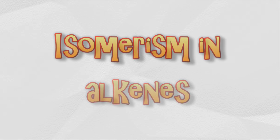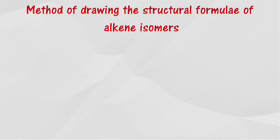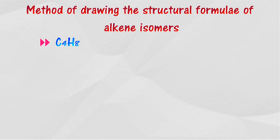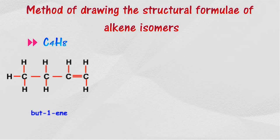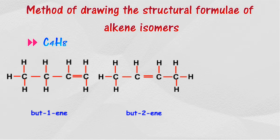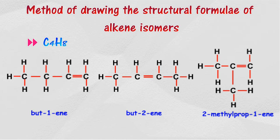Isomerism in alkenes. Alkenes begin showing isomerism starting from butene; the first two members of alkenes do not display isomerism. For example, butene has three isomers of the same molecular formula: but-1-ene, but-2-ene, and 2-methylprop-1-ene.